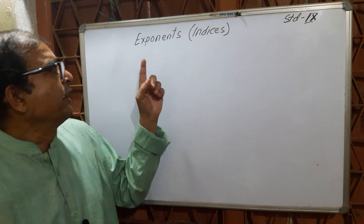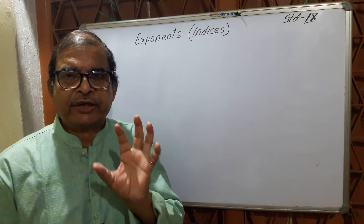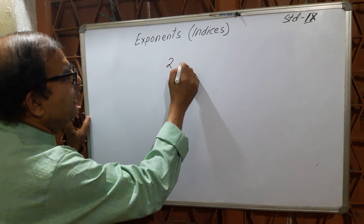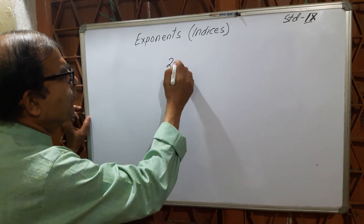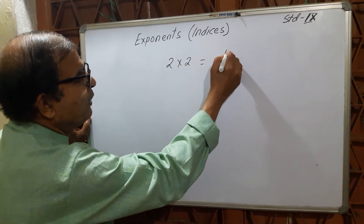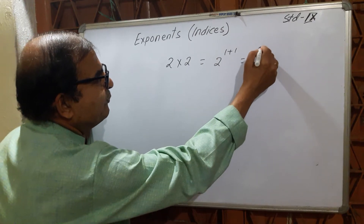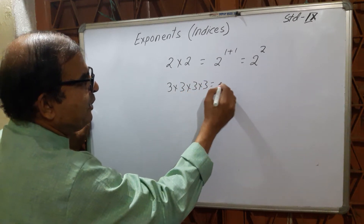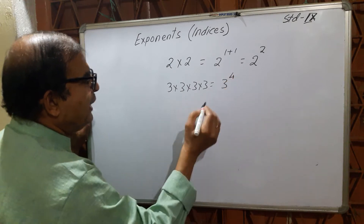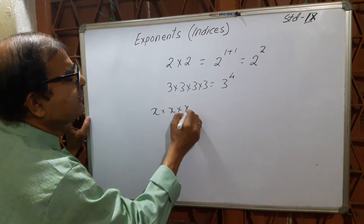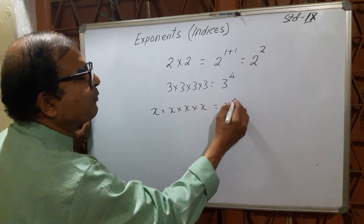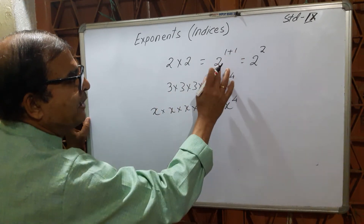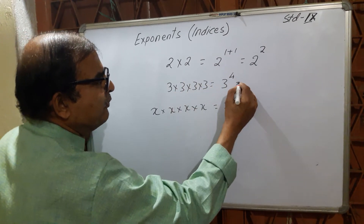Today I explain exponents and indices. The basic idea: 2 × 2 can be written as 2^(1+1) = 2². Similarly, 3 × 3 × 3 × 3 is 3^4, and x × x × x × x equals x^4. When multiplying, the sign is plus — the base stays the same and you write it only once, then add the exponents.